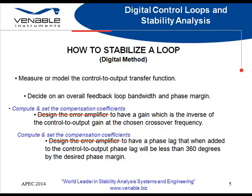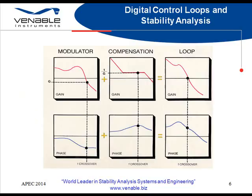When we talk about a digital loop control application, we still have the same breakdown of stages as we do in the analog world. First is the modulator that will exist in the analog power stage with its gain at our chosen crossover frequency. Then we have the compensation stage that exists in the digital portion of our system with coefficients chosen to provide us with the inverse gain at the crossover frequency. These two stages summed together gives the total loop response of the system with the required phase margin at the point where the gain is unity. This is essentially the same as the analog control loop.